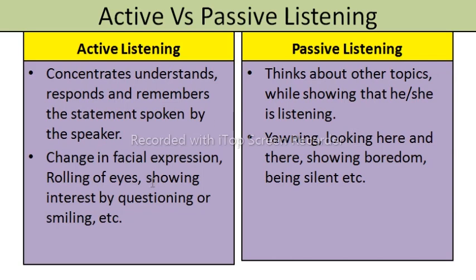Active listener ko pehchanane ka tarika: aapke uske change in facial expression, rolling of eyes, as well as showing interest by questioning or smiling. Aap dekhenge ki ismein non-verbal expression kaafi active ho jate hain active listener ki case mein — aapke uske body language bohot active, bohot interesting, bohot appealing lagegi, aapki baat ko interesting tariqe se sunenge. Lekin passive listener ki body language kaisi hogi — yawning, neend aa rahi hai, woh jamaai le raha hai, idhar udhar dekh raha hai, bohot zyada silent ho gaya hai, bohot dull face, bohot boredom — so yahi passive listening mein aapko dikhe ga.